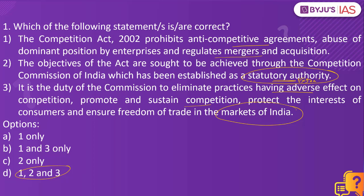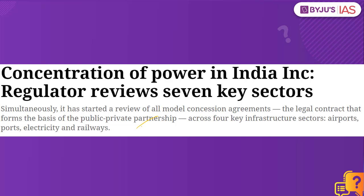So what is an extra-constitutional authority? Those which are not mentioned in the Constitution of India will be called an extra-constitutional authority. The Competition Commission of India is a statutory authority, which means it was established by an Act of the Parliament of India. It is not present in the constitution, so it can also be an extra-constitutional authority. Why have we taken this practice question?